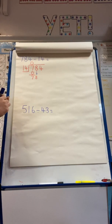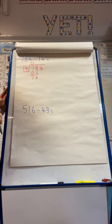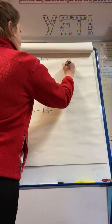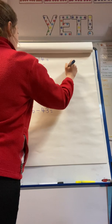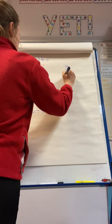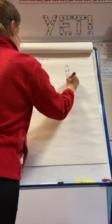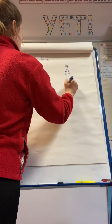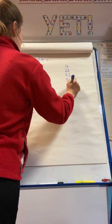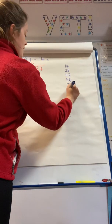I don't know straight away how many equal groups of 14 I can get into 78, so I'm going to write out my 14 times table: 14, 28, 42, 56, 70, 84.